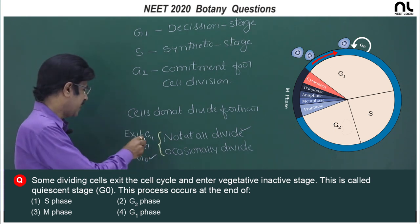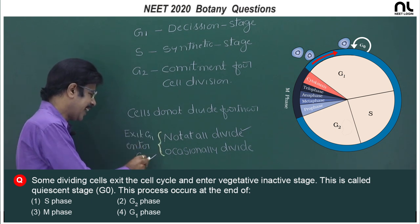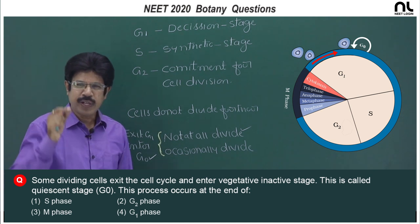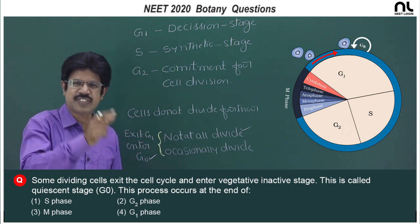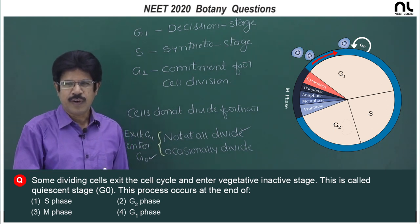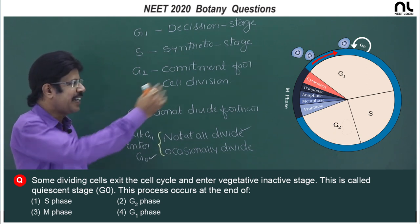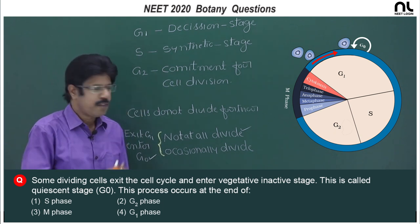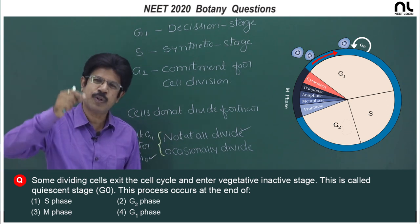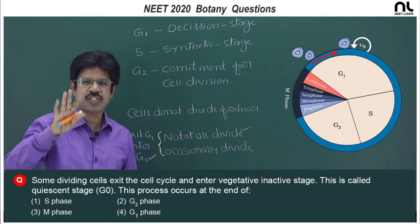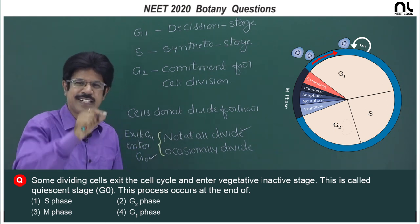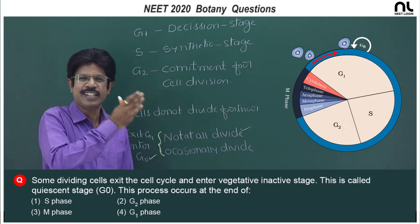At the end of G1, cells exit G1 and enter G naught. To exit or enter, the cell first passes through the decision stage, which is G1. When it receives the go-ahead signal, it enters S. When it does not receive the go-ahead signal, it enters G naught. G naught is metabolically active, with no proliferation unless there is a requirement — whenever there is a requirement, it exits G naught and enters G1.